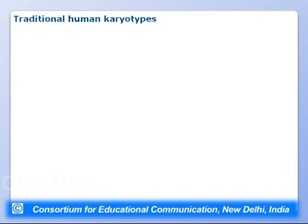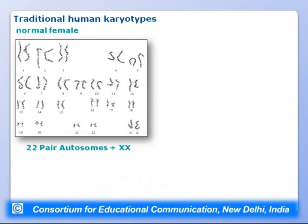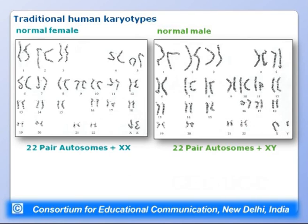The traditional human karyotype for a normal male shows 22 pairs of autosomes plus two sex chromosomes — an X and a Y. A normal female has 22 pairs of autosomes plus two X chromosomes. This raised the question: does the presence of two X chromosomes confer femaleness, or does the presence of Y determine maleness?